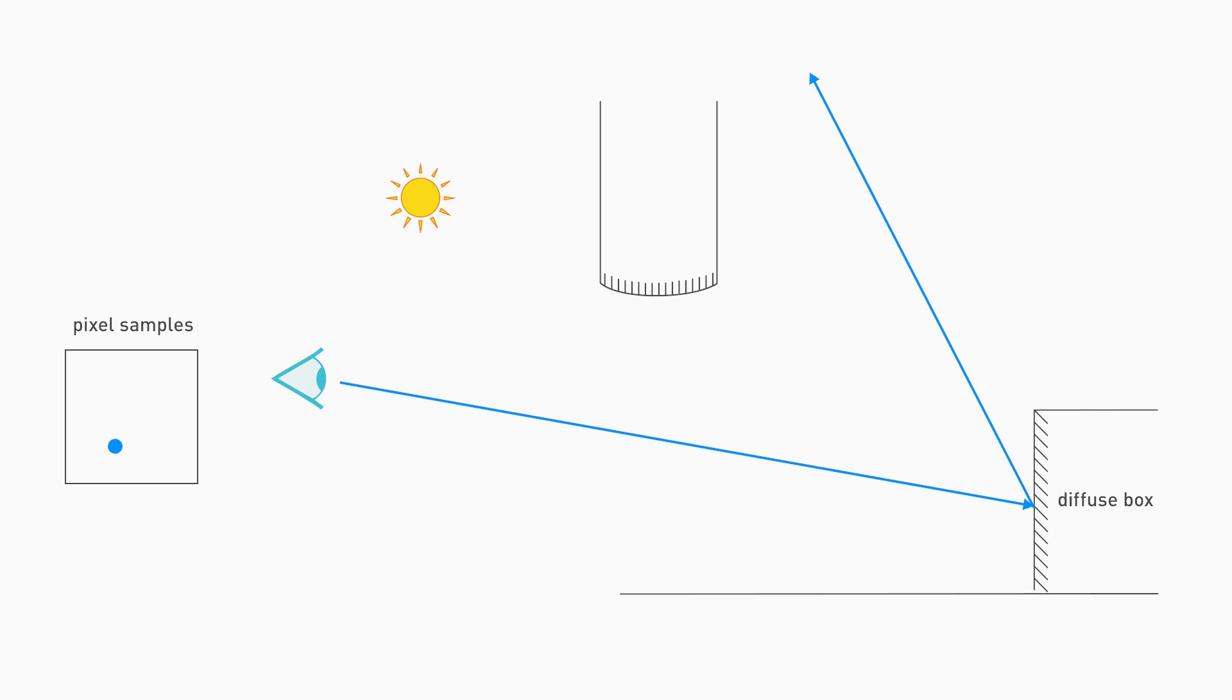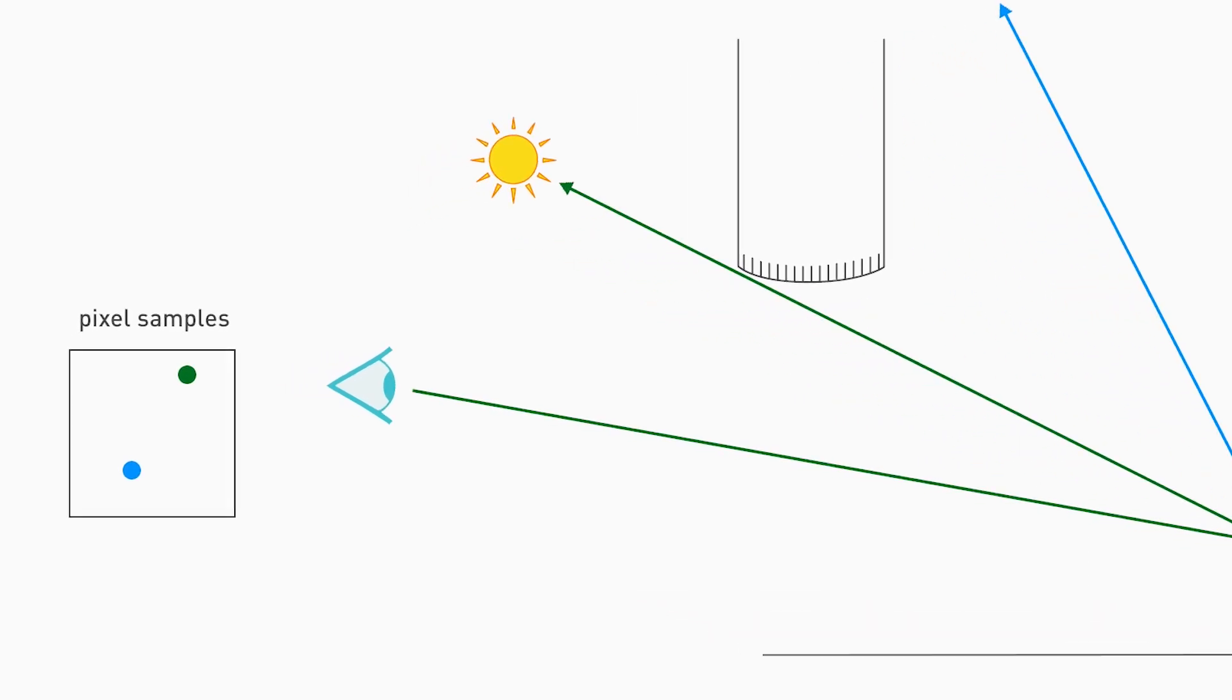We shoot another ray. That one happens to hit a light, so that's a fairly important contribution—a lot of direct illumination from the sun. Notice that we've also put the pixel sample in a slightly different location within the pixel.